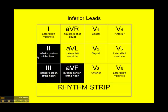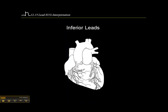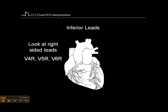The inferior leads are 2, 3, and AVF. These represent the inferior portion of the left ventricle, which is fed most of the time by the right coronary artery, or the RCA. The inferior portion is located at the bottom of the left ventricle.